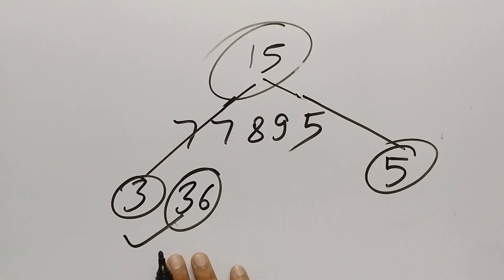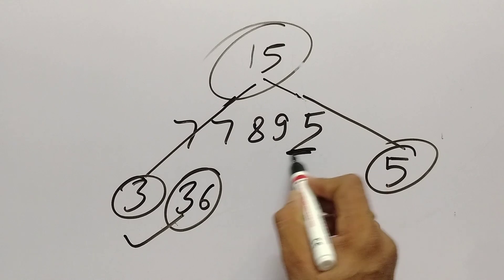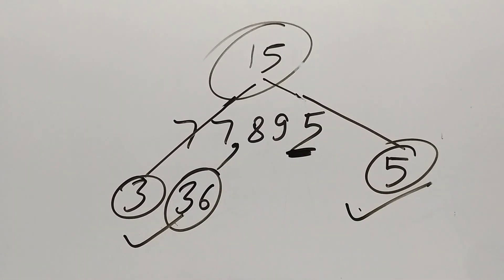Does 36 come in the 3 table? Yes. So it is divisible. Last digit is 5, so it is divisible by 5. So we can say 77,895 is exactly divisible by 15.